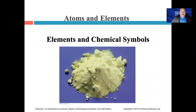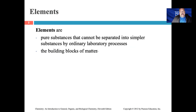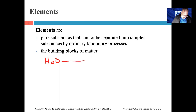In our second module, we're going to take a look at atoms and elements. We'll begin by talking about elements and what are known as chemical symbols. Elements are pure substances that cannot be separated into simpler substances by ordinary laboratory processes — they are the building blocks of matter. For example, water (H2O) is not an element because if you push conditions, you can break water down into hydrogen and oxygen.